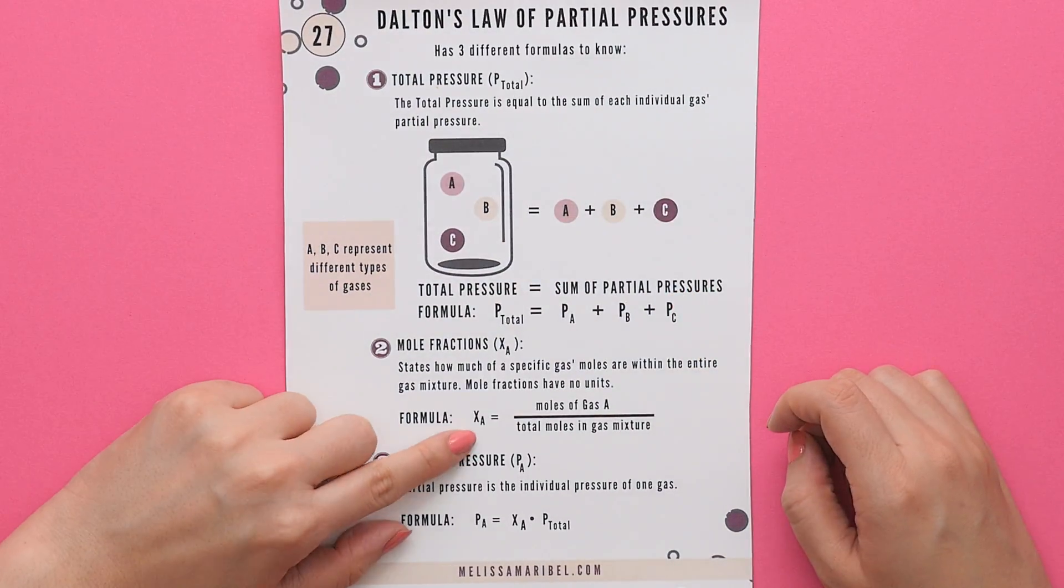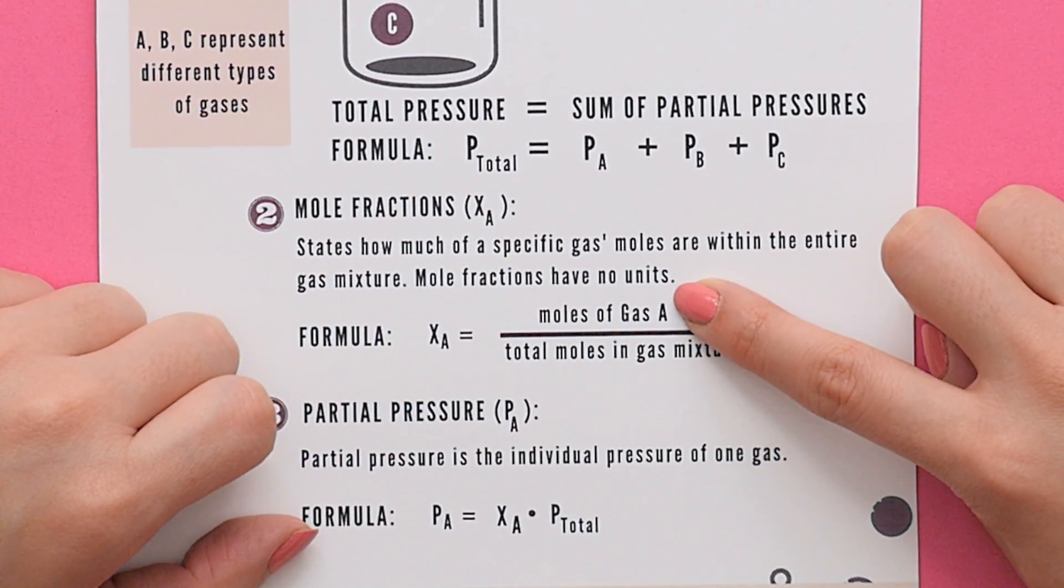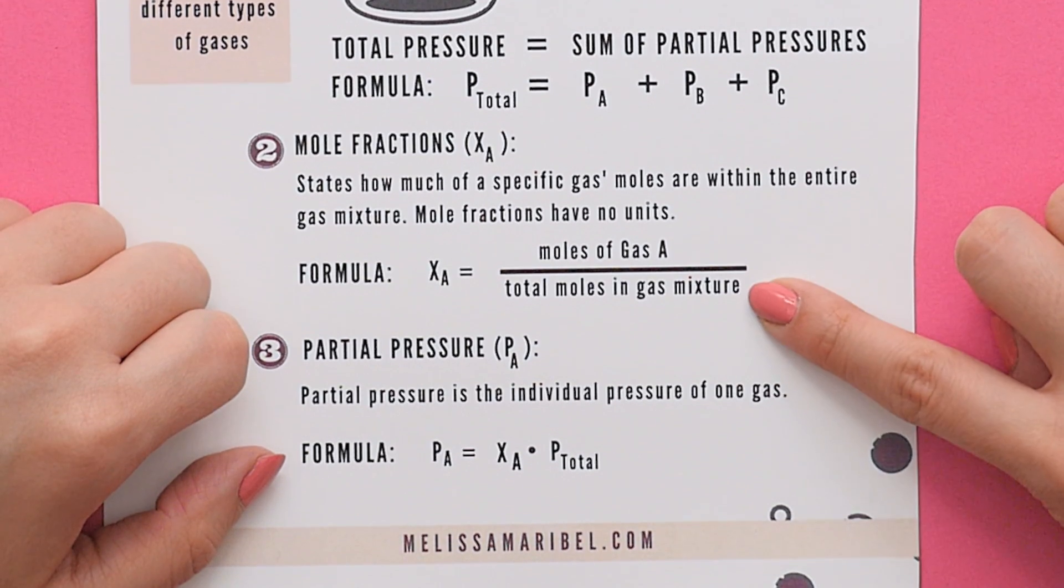The mole fraction of a gas consists of the moles of that specific gas divided by the total moles of the gas mixture.